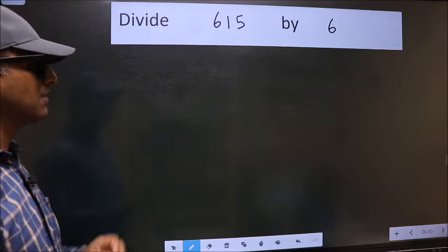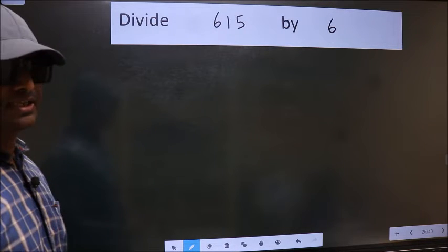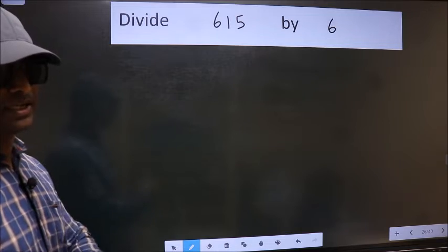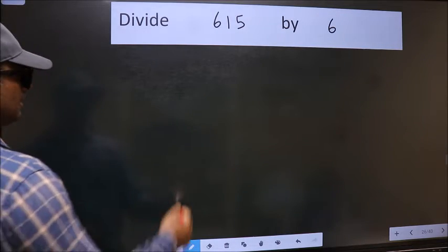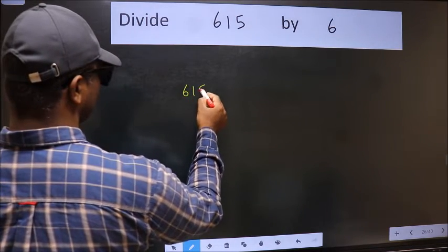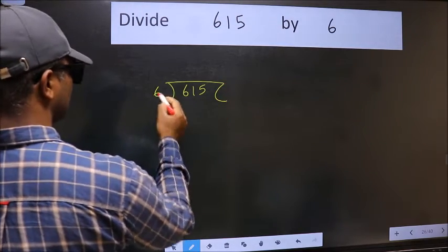Divide 615 by 6. To do this division, we should frame it in this way. 615 here and 6 here.